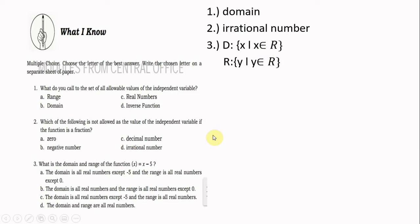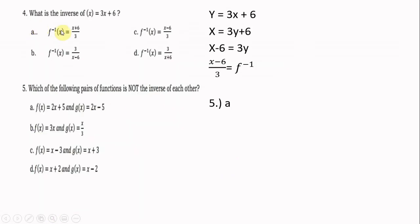Number four: what is the inverse of f(x) = 3x + 6? To get the inverse, change f(x) to y, so y = 3x + 6. Then interchange x and y: x = 3y + 6. Solve for y — transpose 6 to the right: x − 6 = 3y. Divide both sides by 3, so the inverse is f⁻¹(x) = (x − 6)/3.